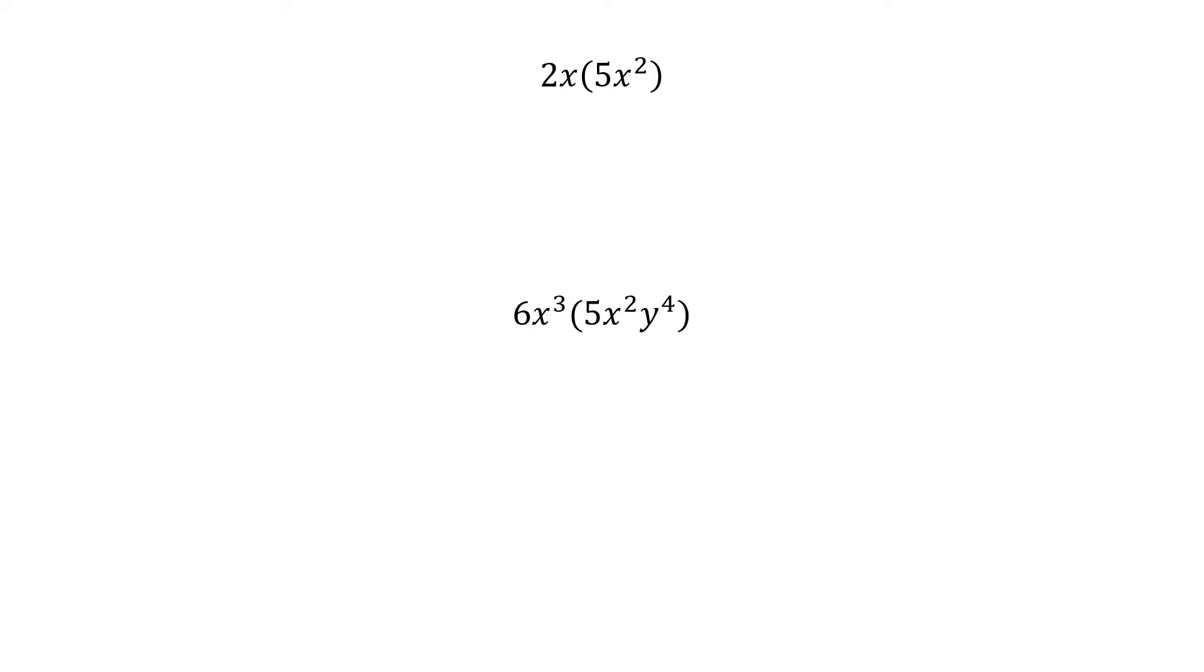Now remember when we're multiplying. First of all, two things side by side with no sign means multiply. If we're multiplying like bases, we add the exponents. However, coefficients, or the big numbers in front, the rules don't change for those. The rules only change for the exponents. So, when I have 2x times 5x squared, I still multiply my coefficients. 2 times 5 is 10. And then I add my exponents. Don't forget, there's an understood 1 right there. So, what I have is x1 and x2. This gives me x3. 1 plus 2 is 3. 2x times 5x squared is 10x cubed.